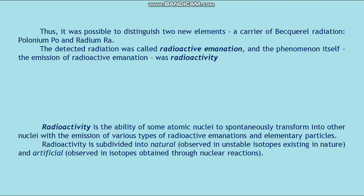Radioactivity is subdivided into natural, observed in unstable isotopes existing in nature, and artificial, observed in isotopes obtained through nuclear reactions. There is no fundamental difference between the two types of radioactivity since the laws of radioactive transformation are identical in both cases.